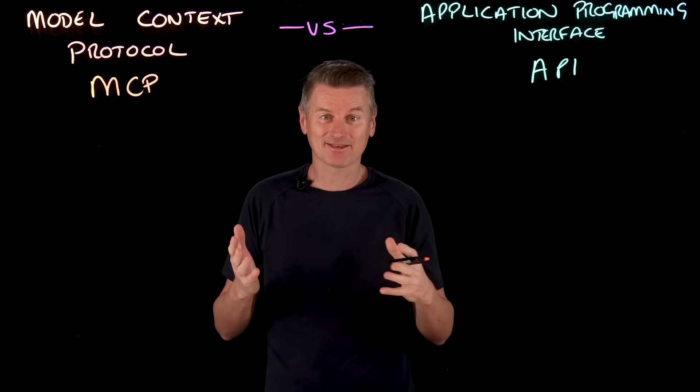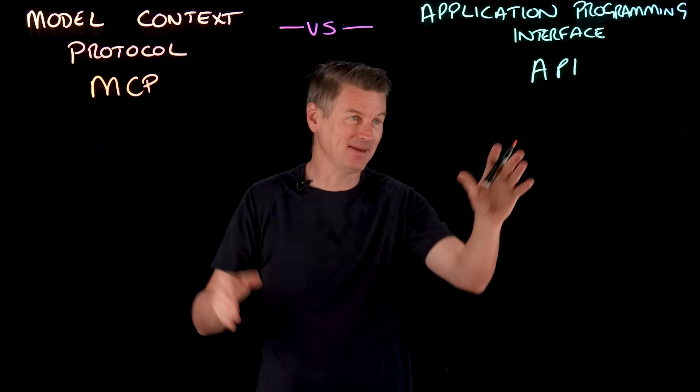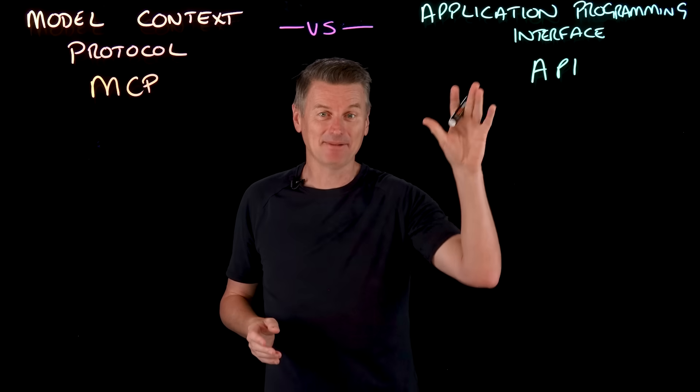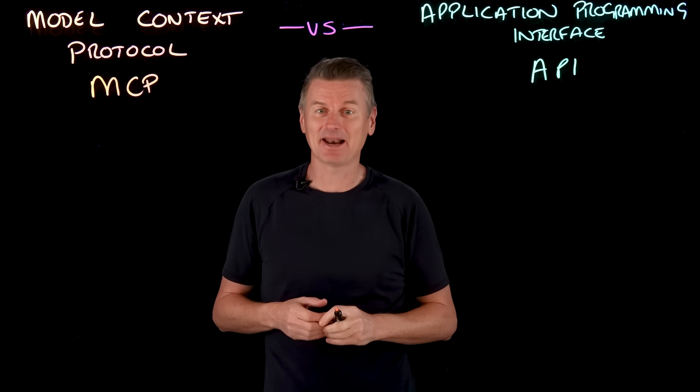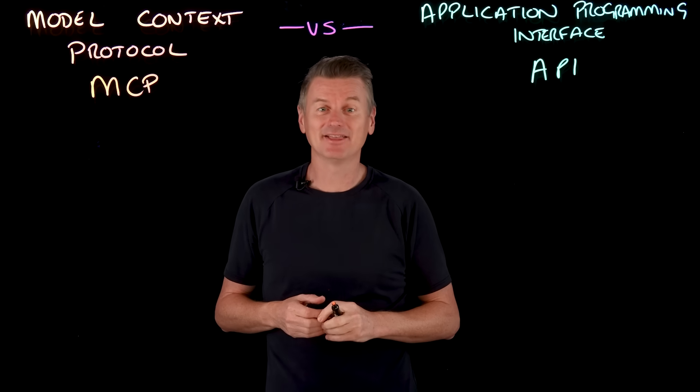Let's define these two terms, MCP and API, and take a look at their similarities and differences. A good metaphor for MCP is that it's kind of like a USB-C port for your AI applications, because it standardizes connections between AI applications, LLMs, and external data sources.